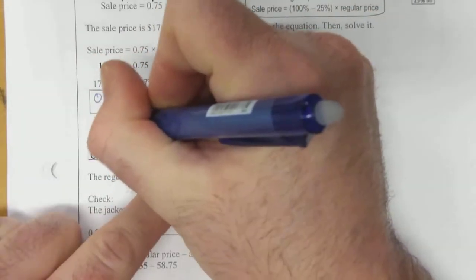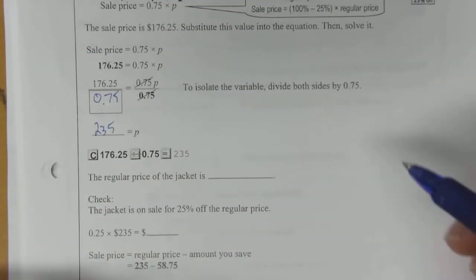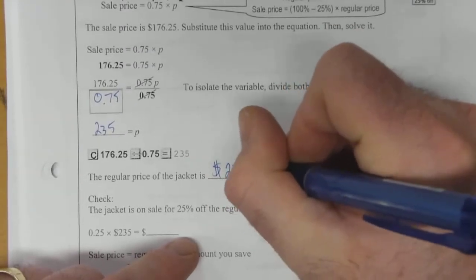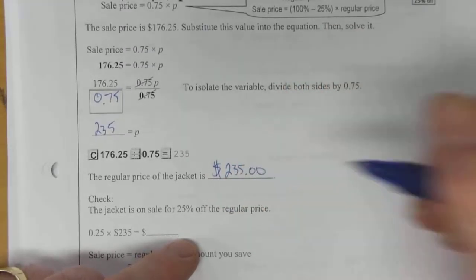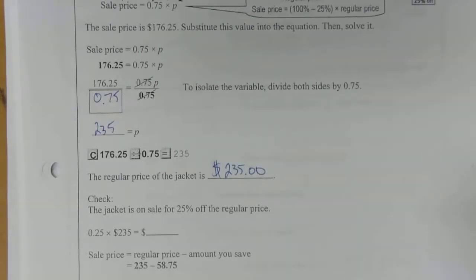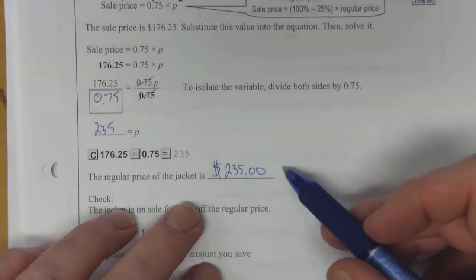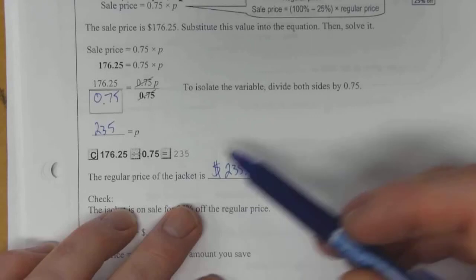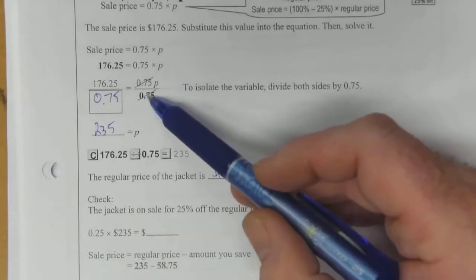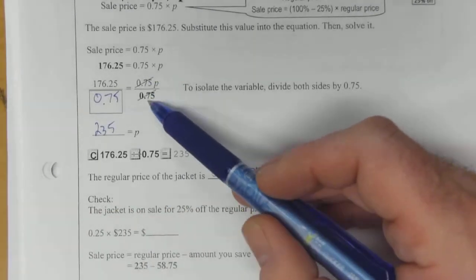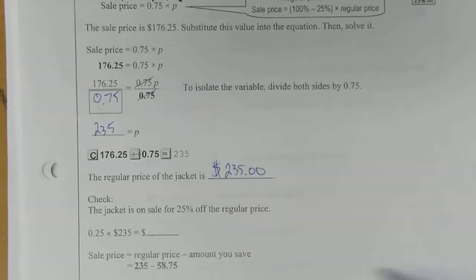So the regular price of the jacket, and again we want units, is $235. That's what we're going for. And I didn't say it, but of course the 0.75 divided by 0.75 just equals 1, so it just becomes 1P or P.